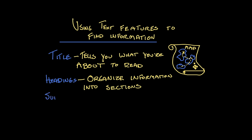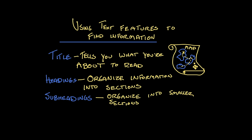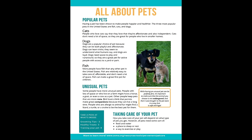Smaller than a heading is a subheading, which organizes text into even smaller sections. To go back to the text again, we can see that under the main heading of popular pets, there are three subsections — cats, dogs, and fish — the three most popular pets in the United States.